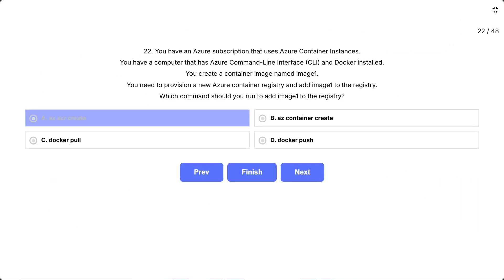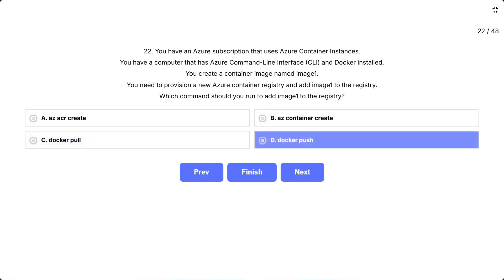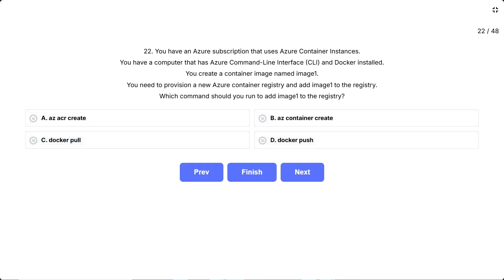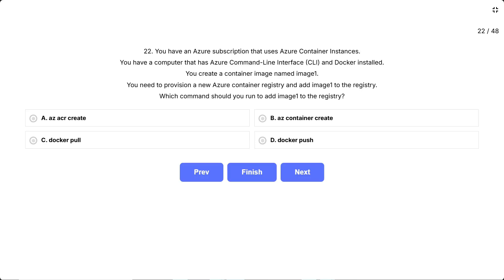Options: az acr create, az container create, docker pull, docker push. Imagine you just baked a cake — image 1 — in your kitchen. The Azure container registry is the bakery display case where customers can later pick it up. To get the cake into the display case, you physically place it there. In Docker terms, that action is the docker push command. Correct answer: docker push.